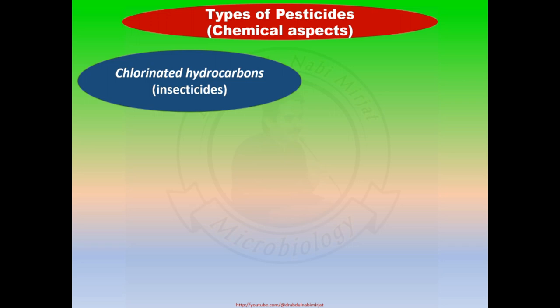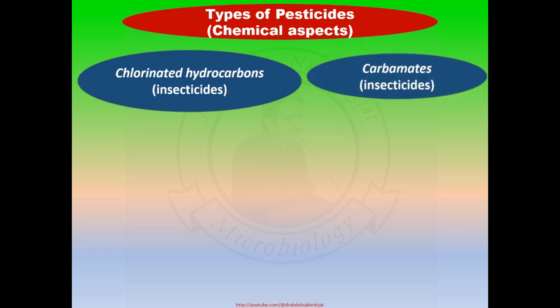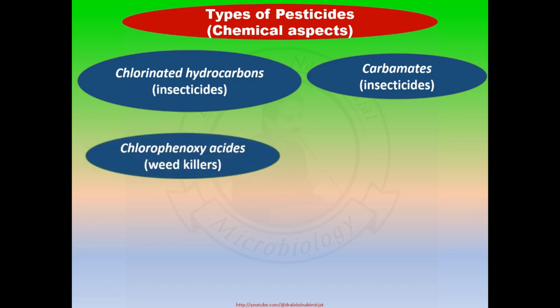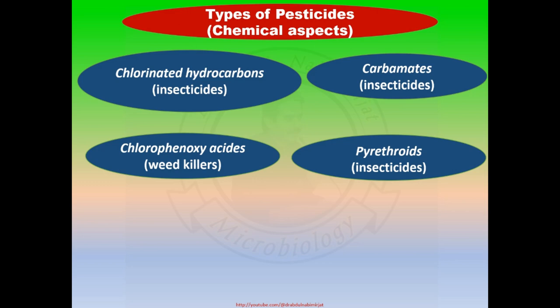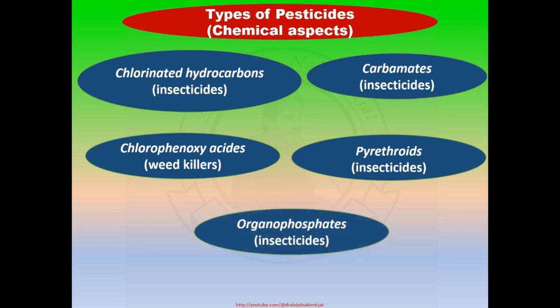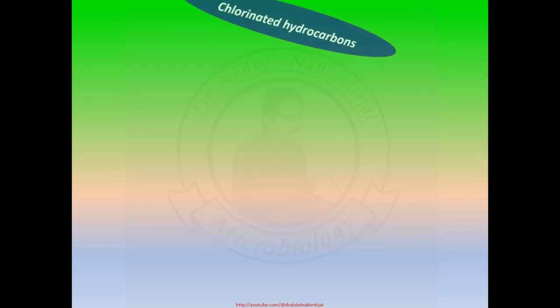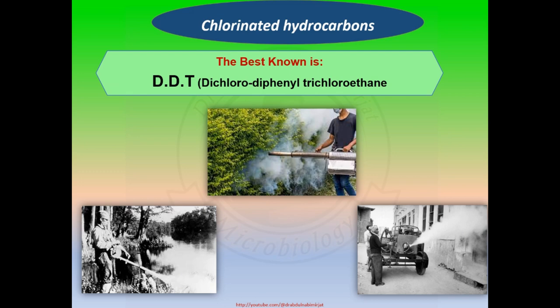Types of pesticides based on chemical aspects include chlorinated hydrocarbons, carbamates, chlorophenoxyacids, pyrethroids, organophosphates, and many other heterocyclic compounds. Among the chlorinated hydrocarbons, the best known is DDT — dichlorodiphenyl trichloroethane — which is spread worldwide.